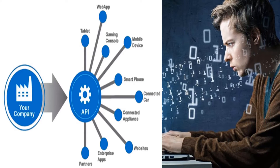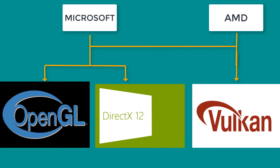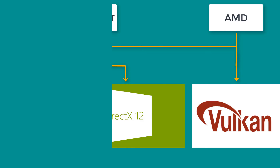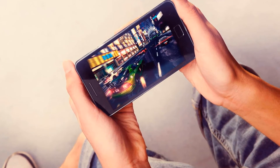For software developers, an API helps them interact with other kinds of software made by other developers. DirectX is a graphics API, just like OpenGL and Vulkan. DirectX and OpenGL are developed by Microsoft, whereas Vulkan is developed by AMD. AMD also mentioned that Vulkan may make its way to Android smartphones, which would make smartphone gaming far better than what it is right now.